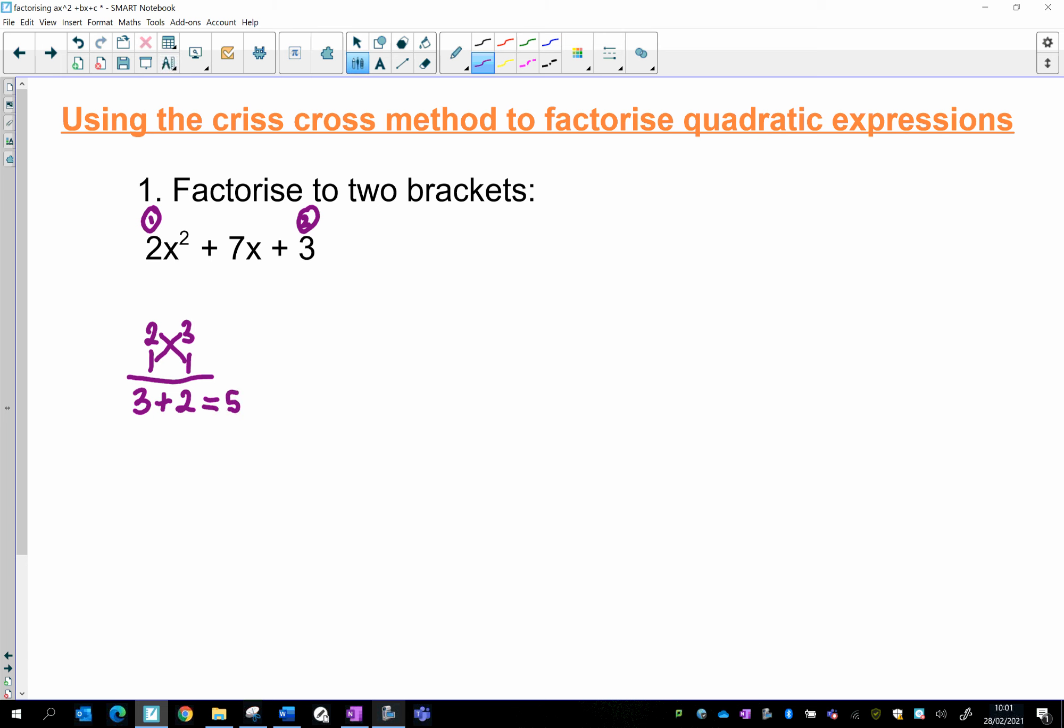3 plus 2 is equal to 5. And I can see that this is no good because what I want is for this number here, 5, to be the same as this number here in the middle. Now it isn't. So I'm going to try something else. Back to the beginning. So 2, let's stick with 2 times 1. I've got no choice, but I can see that actually I could swap over the 1 and the 3. So looking at the 3 on the end there, 1 times 3 is 3. Let's do crisscross again. 2 times 3 is 6. 1 times 1 is 1. This time, if I do 6 plus 1, 6 plus 1 equals 7, which is the same as the number in the middle. So I'm now happy.